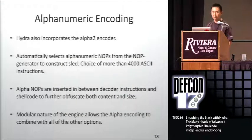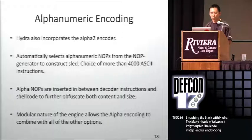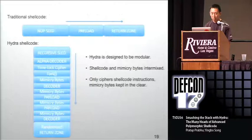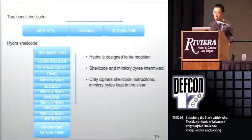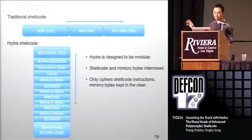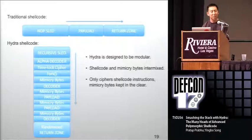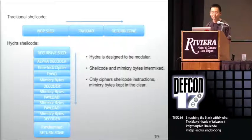Alpha-numeric encoding drops all your shellcode into the printable characters range. We use the alpha-2 encoder, incorporated into Hydra, along with alpha-numeric no-op generators. The main benefit of Hydra is that all these features are modular and work together. Traditional shellcode has a no-op sled, payload, and return zone. Hydra shellcode has a recursive sled, alpha decoder, time-locked cipher, fork, and the payloads and decoders all scattered around. The goal is to make it impossible — or at least very hard — to recognize what you're looking at as shellcode, defeating signatures, statistical methods, and emulator-based IDS.